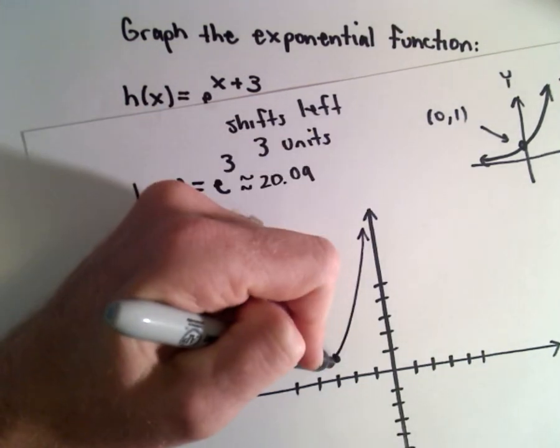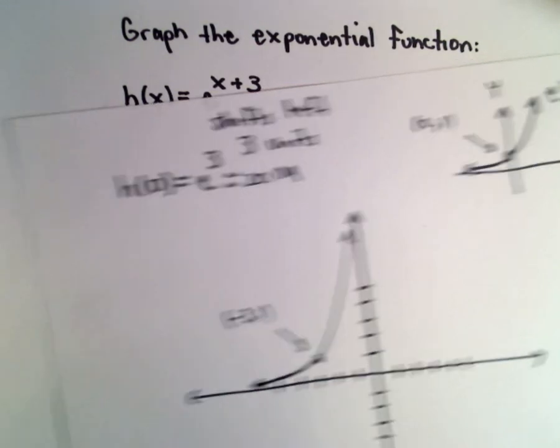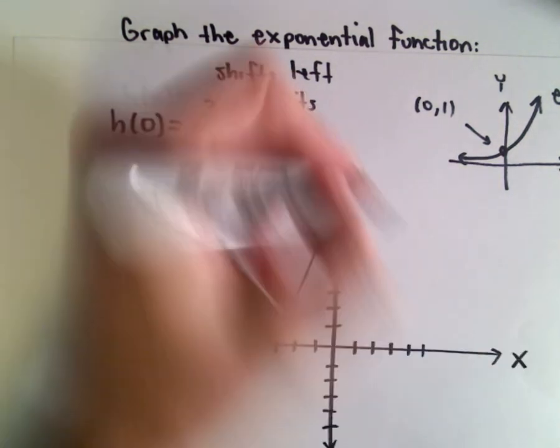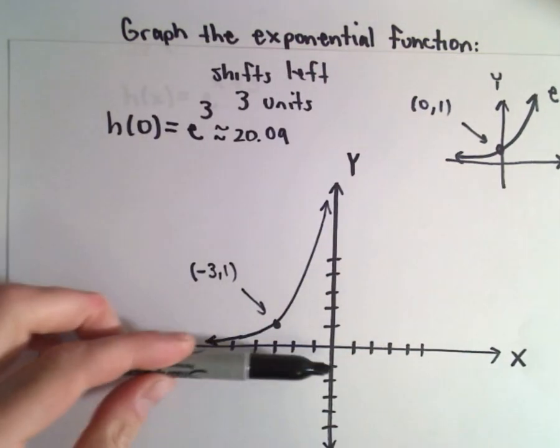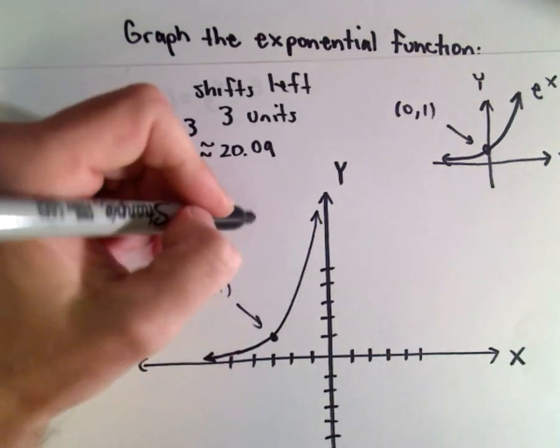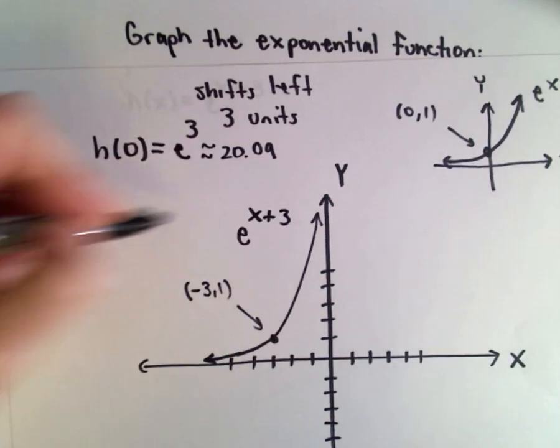And again, it's going to approach the x-axis as you move to the left, but it's never going to touch it. That x-axis or the line y equals 0 is going to be a horizontal asymptote. But that would be a rough sketch of e raised to the power of x plus 3.